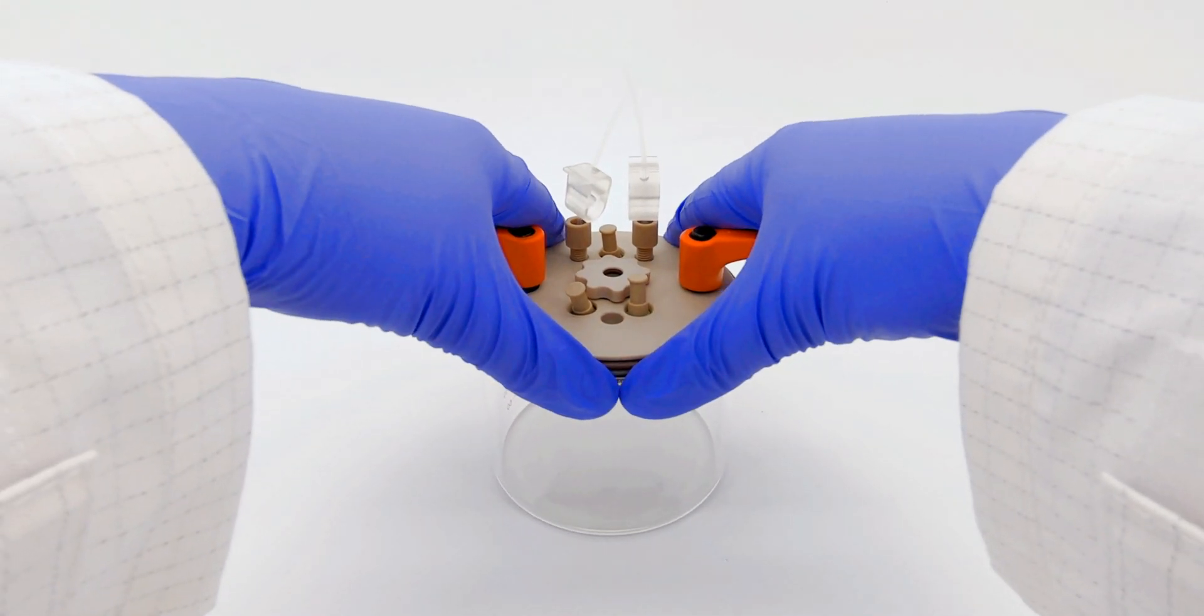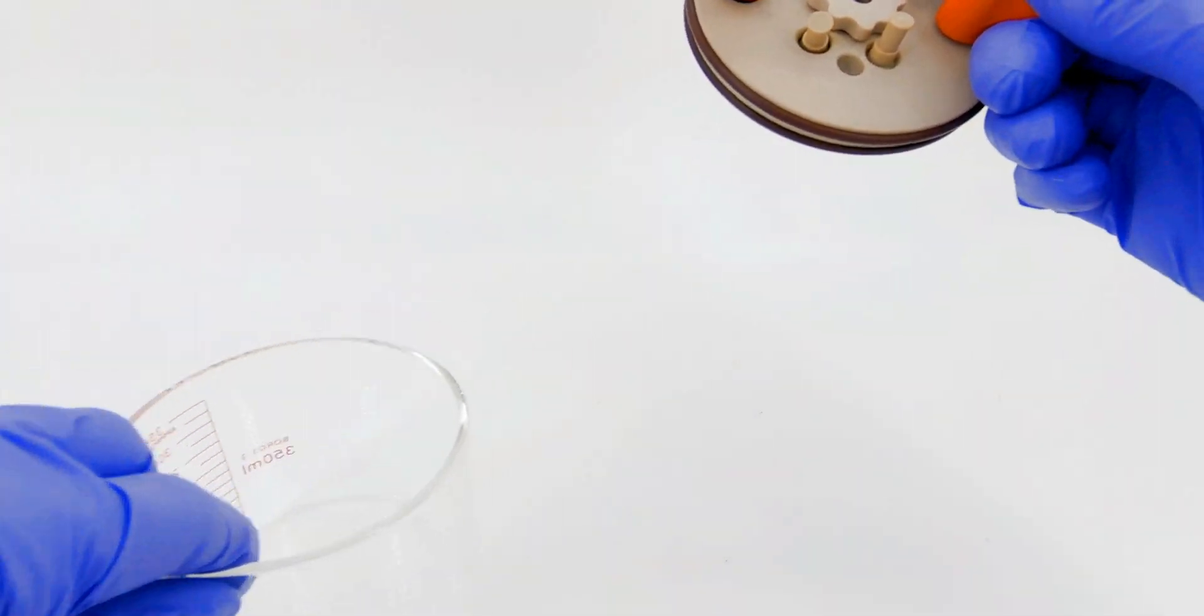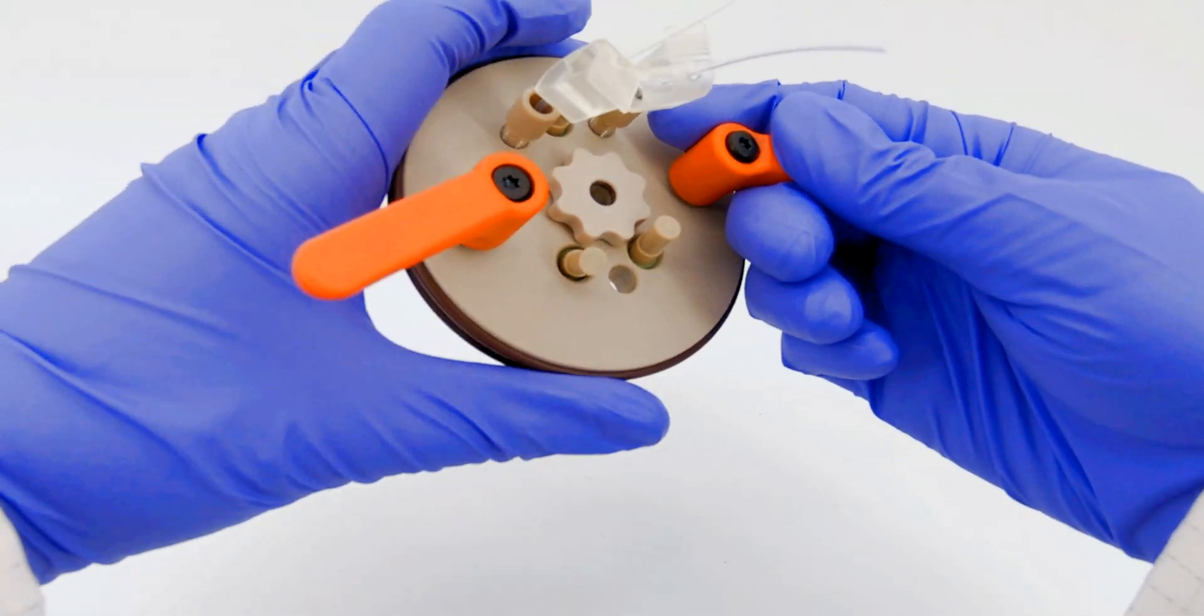Remove the lid of the cell by pulling up on the two orange handles and pushing away from the glass body using your thumbs.